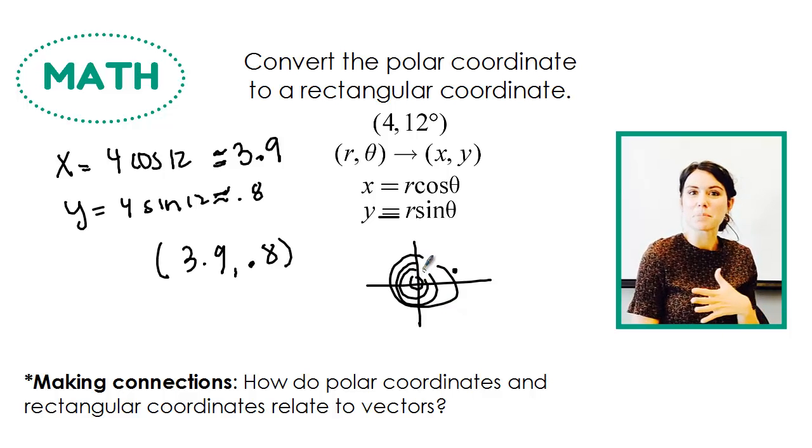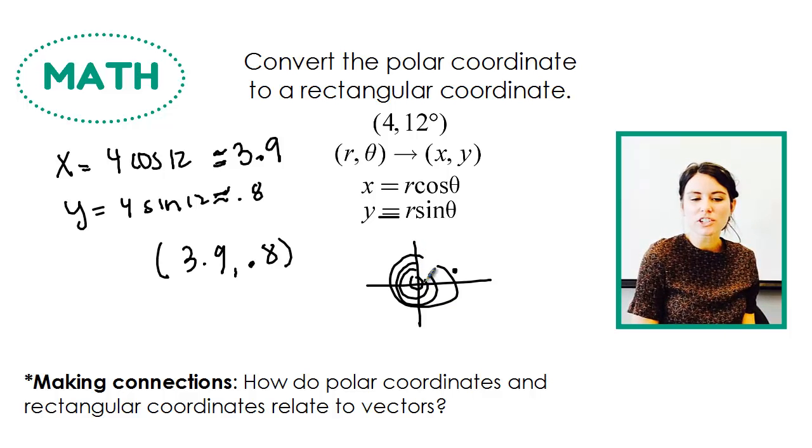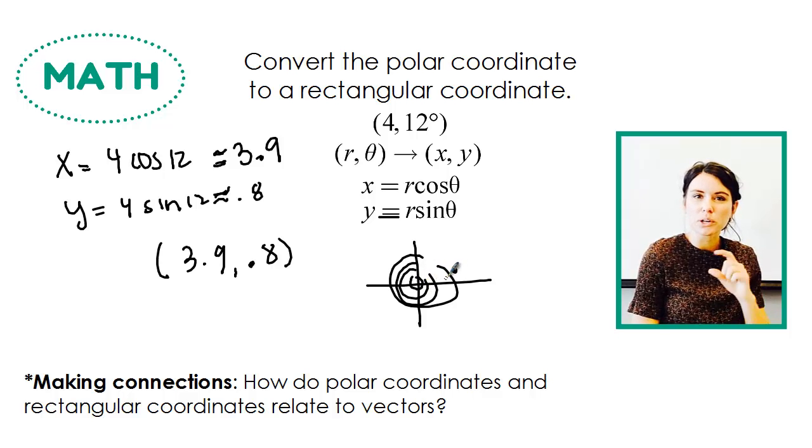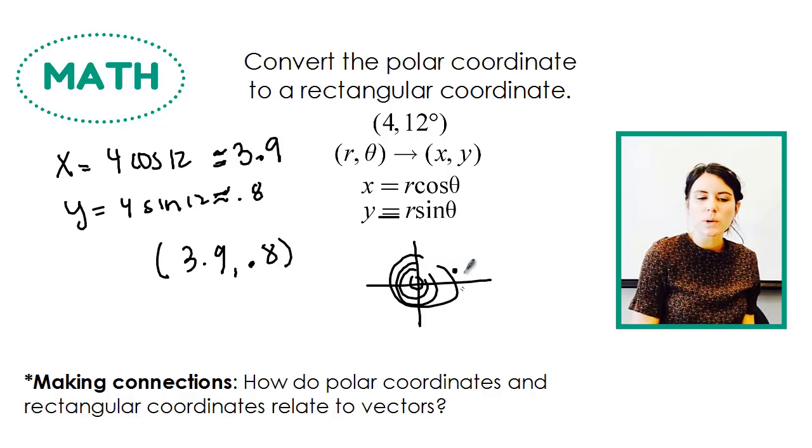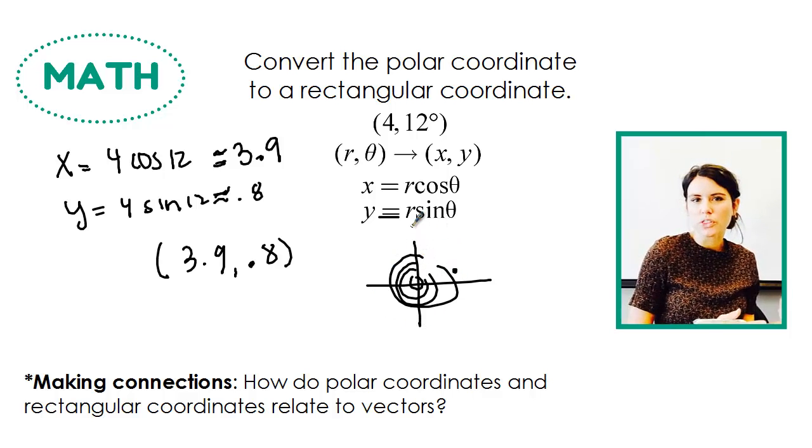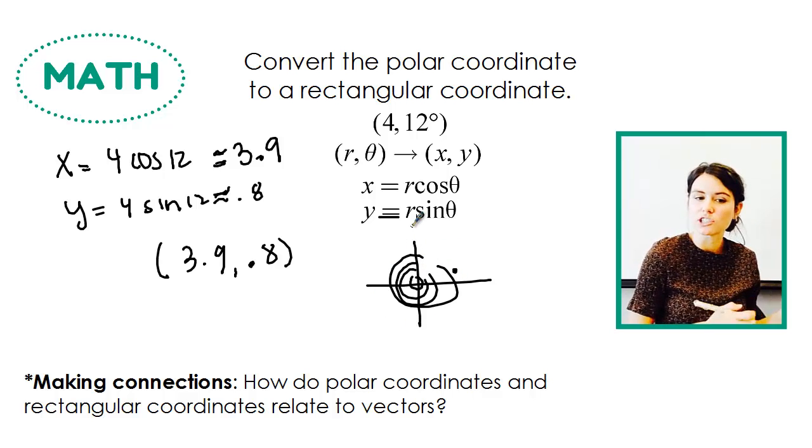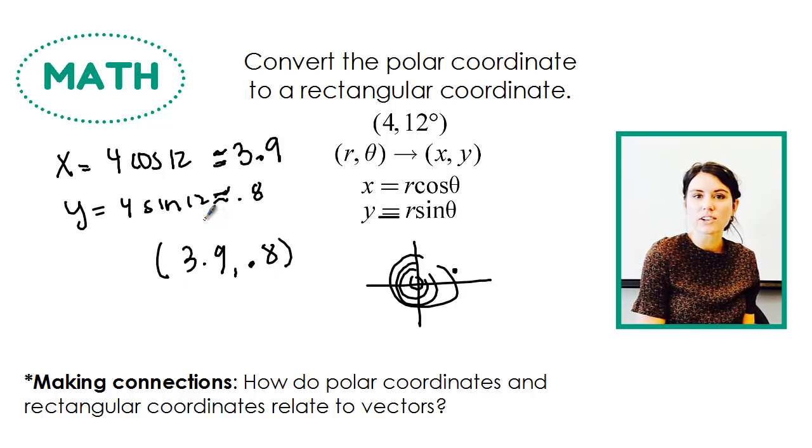That's a terrible drawing. Something similar to that, but obviously a lot better. 12 degrees is in the first quadrant and it's pretty low. And then that would be about 4. So we can kind of check it that way, just make sure that it's in the same location. That's how you take a polar coordinate and convert it to rectangular.